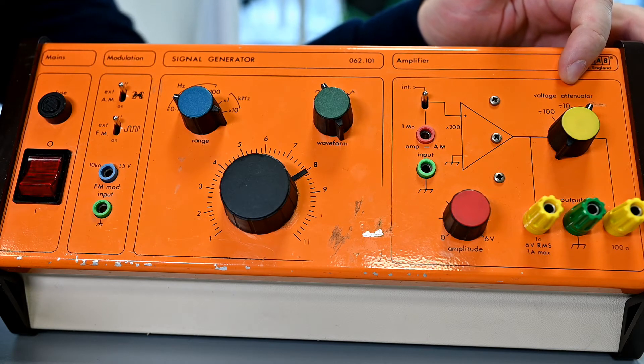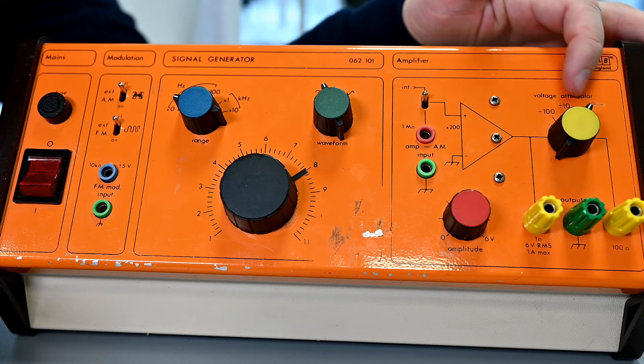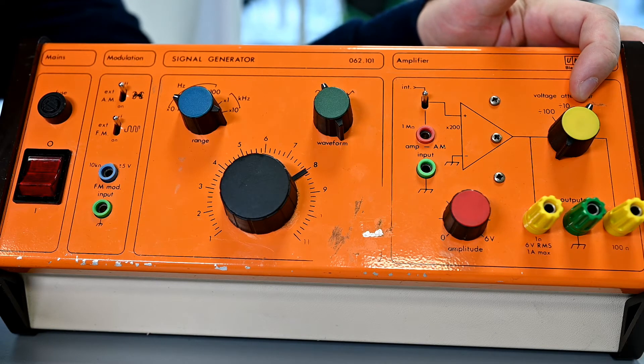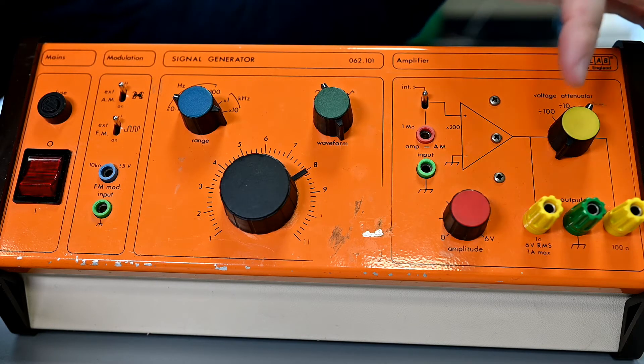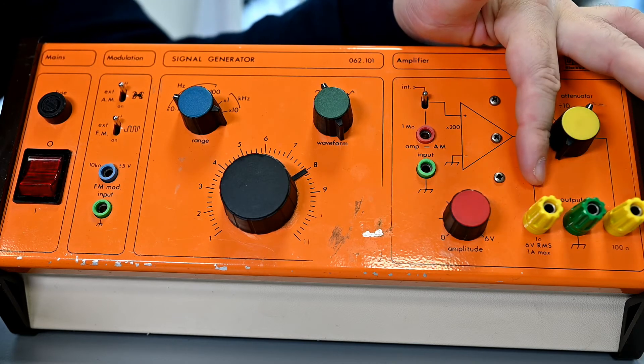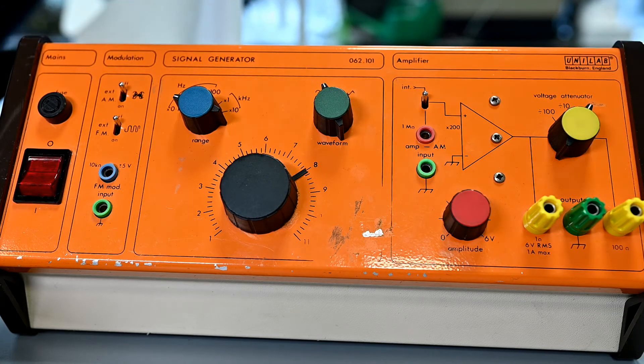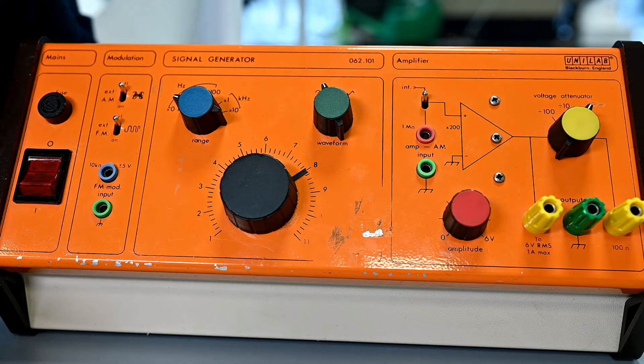The attenuator means reducer, so I could reduce the voltage output if I wanted by either 10 times or 100 times. Probably don't want to do that, just leave it on one. Then I can output either low or high, that means low impedance or high impedance, and that's to do with matching the impedance of the device you're plugging in.